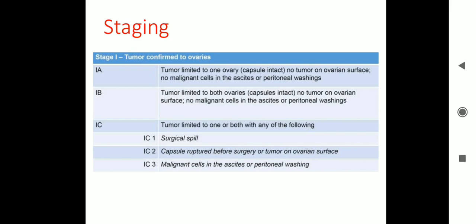Coming to the staging of ovarian CA. Stage 1 is where the tumour is confined to the ovaries, subdivided into 1A, 1B, and 1C. Stage 1A: tumour limited to one ovary, capsule intact, no tumour on ovarian surface, no malignant cells in ascites or peritoneal washings. Stage 1B: tumour limited to both ovaries, no tumour on ovarian surface. Stage 1C: tumour limited to one or both ovaries with any of: 1C1 surgical spill; 1C2 capsule ruptured before surgery or tumour on ovarian surface; 1C3 malignant cells in ascites or peritoneal washings.